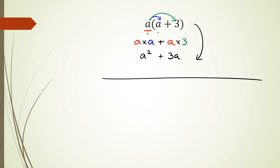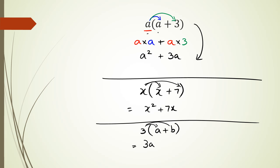So if I was to show you another example, if I have x times (x plus 7), then I can write this up straight away as x times x which is x squared, and then x times plus 7 is going to be plus 7x. Or if I have 3 times (a plus b), then this could be written as 3 times a is 3a and then 3 times b is 3b.